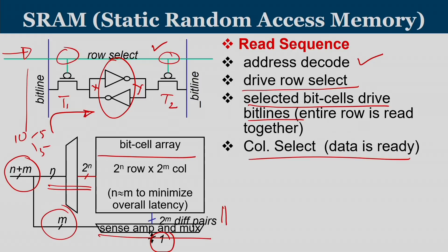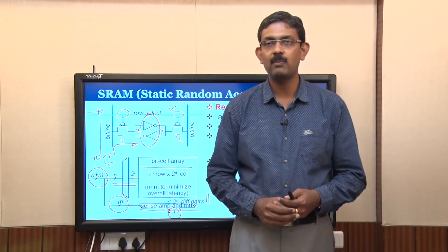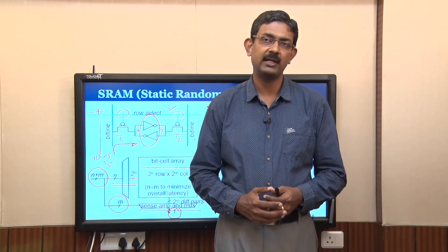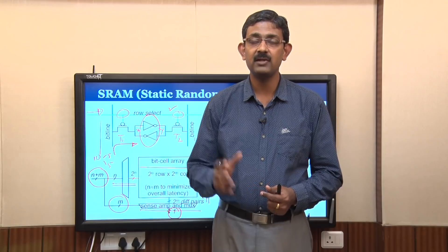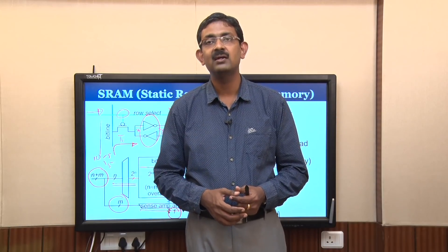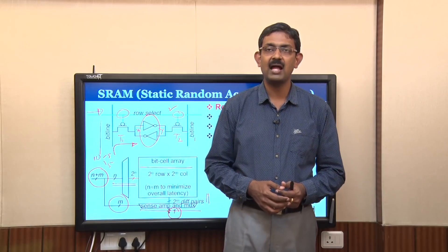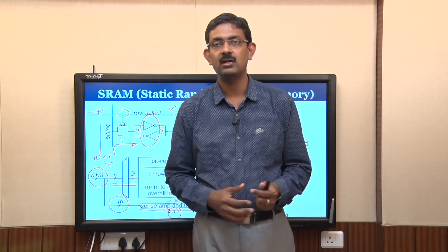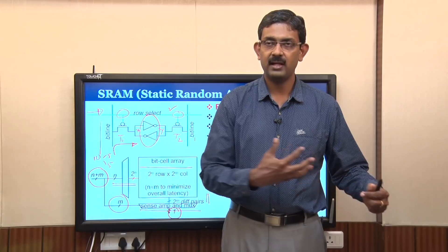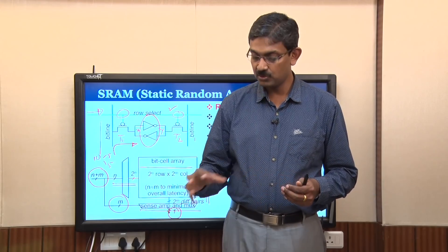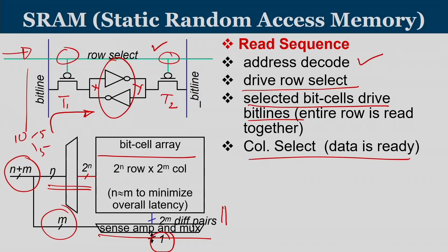To summarize SRAM: it is built with two cross-coupled NOT gates and two transistors, with a word line and a bit line. Once the word line is activated the transistor acts like a short circuit in the ON position, values flow from the bit line into the NOT gate, and the values are stored there. Multiple such bit cells are organized together to form the bit cell array.